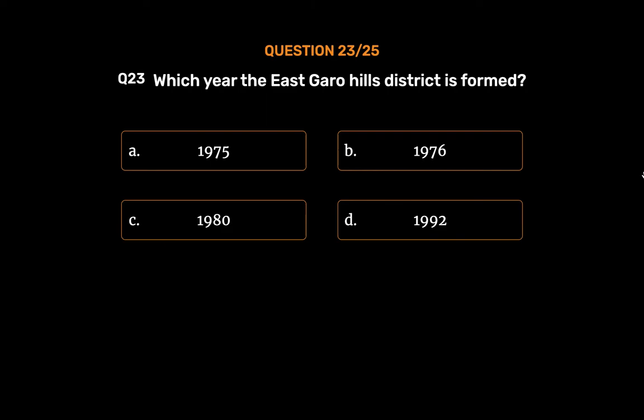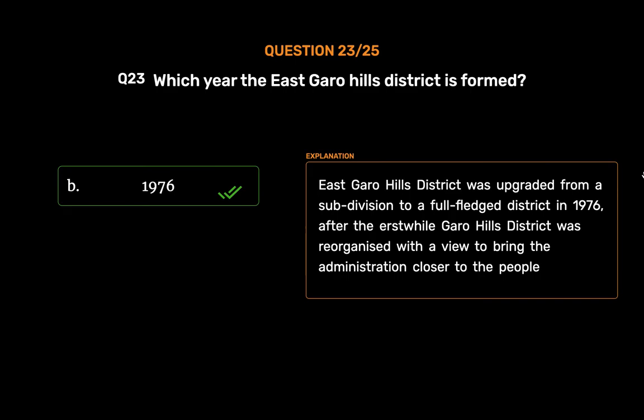The correct answer is Option B: 1976. East Garo Hills District was upgraded from a subdivision to a full-fledged district in 1976, after the erstwhile Garo Hills District was reorganized with a view to bring the administration closer to the people.